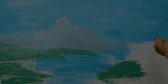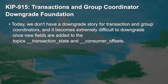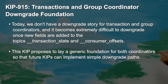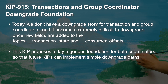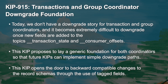Next up, let me introduce you to KIP 915. What happens when you want to downgrade transaction and group coordinators after new fields have been added to the transaction state or consumer offsets topics? If you've ever had to do that, you know it's tough. Since major changes have been made to the consumer group coordinator under KIP 848, KIP 915 seeks to make this downgrade process easier by laying a generic foundation for both coordinators and opening the door to backward-compatible changes to the record schemas through the use of tag fields.